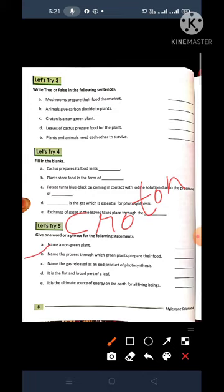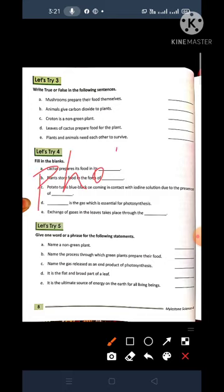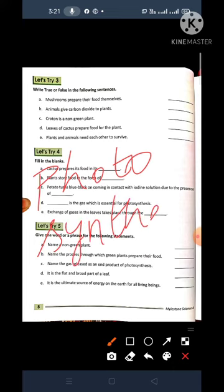Now come to the B. Name the process through which green plants prepare their food. I hope you know this answer. That is Photosynthesis. What you will write in B? Photosynthesis P-H-O-T-O-Photo-S-Y-N-T-H-E-S-I-S-Photosynthesis. In B what you will write photosynthesis.